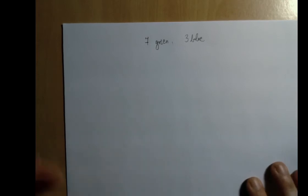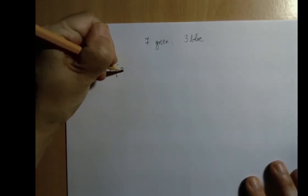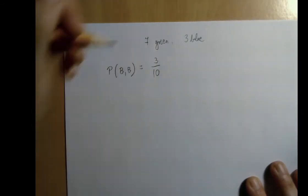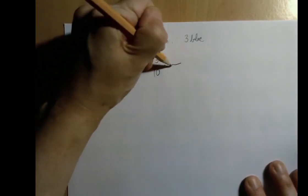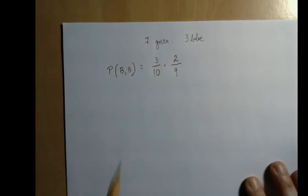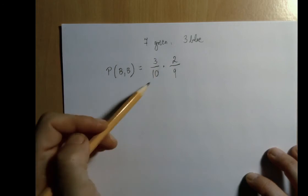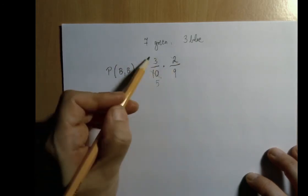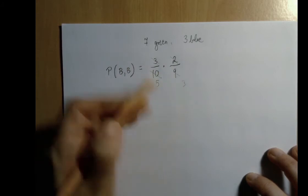So first, the probability of, I'm just going to say blue, blue. So the first one is 3 out of 10. But now, we don't put back that marble that we pulled. So now we're left with only 9 marbles, out of which only 2 of them blue. Right, so both numerator and denominator decreased by 1. We're better off simplifying before the multiplication. So this is a 5, that's gone, this is gone. So it's 1 over 15.